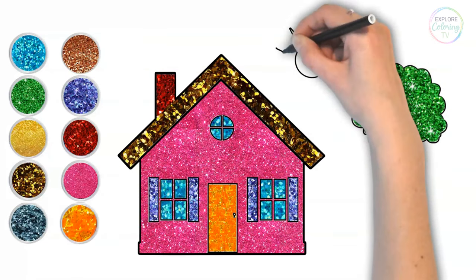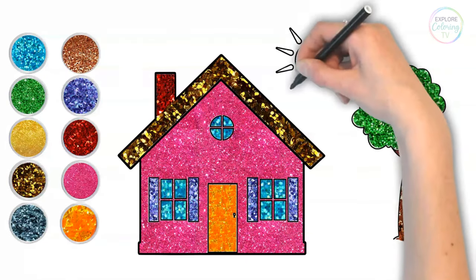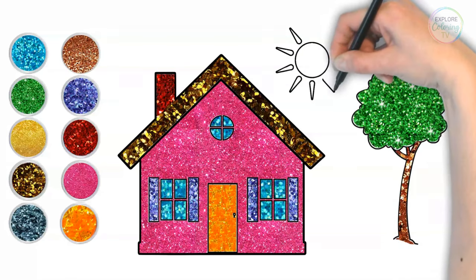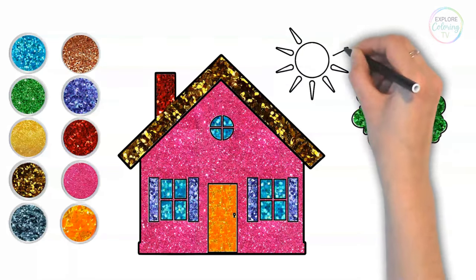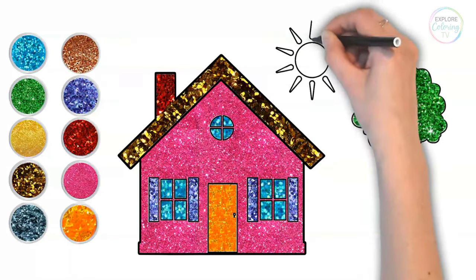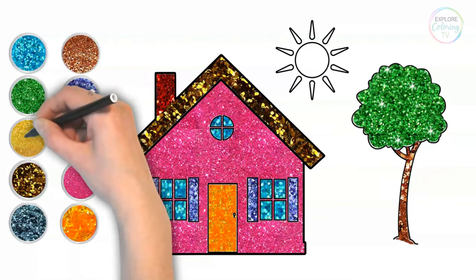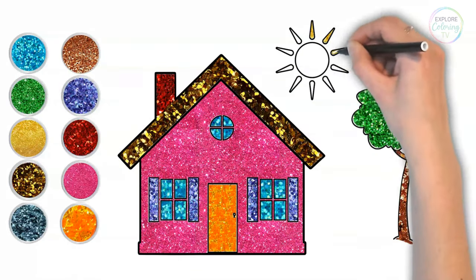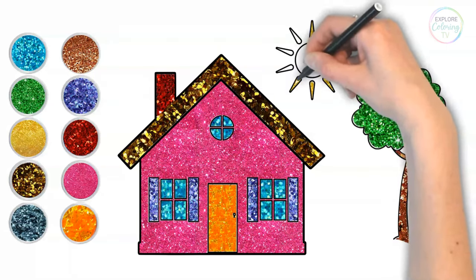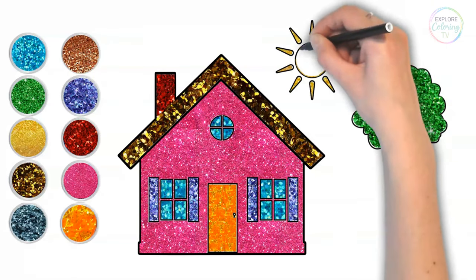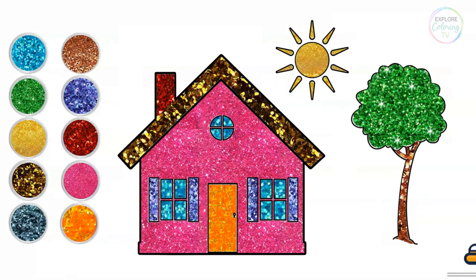A circle to create our sun. We'll draw the sun's rays all around it. Let's fill in the sun with this bright yellow. Look how warm the sun looks now.